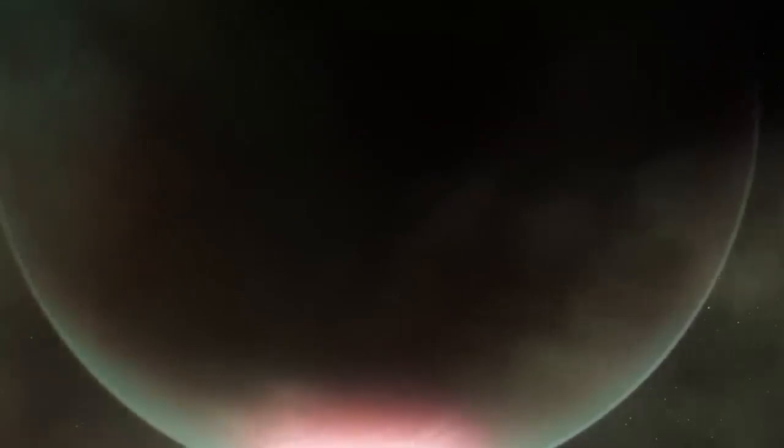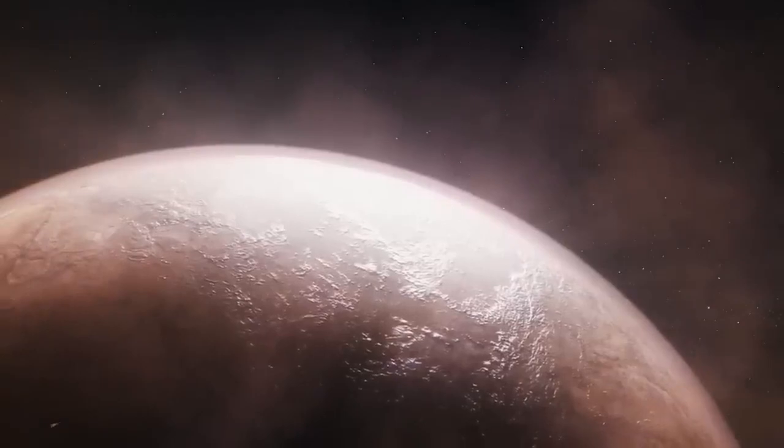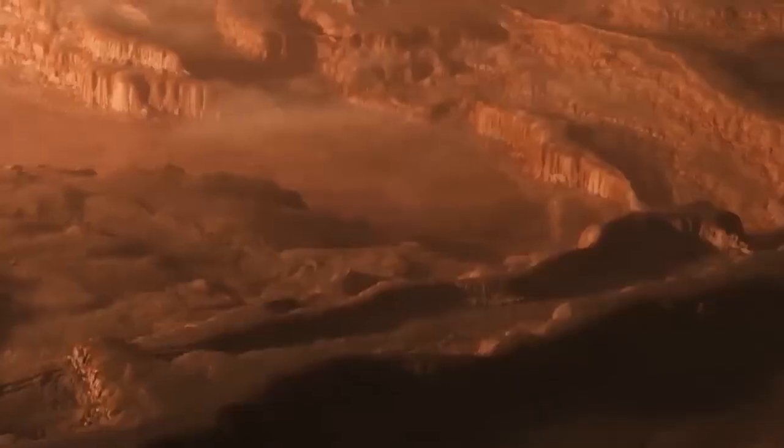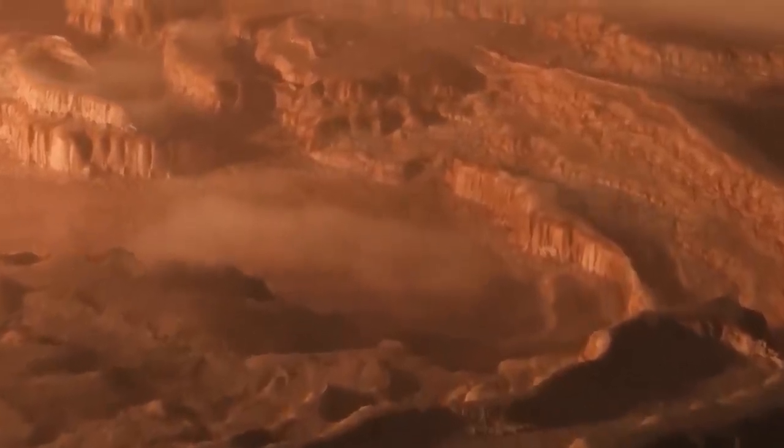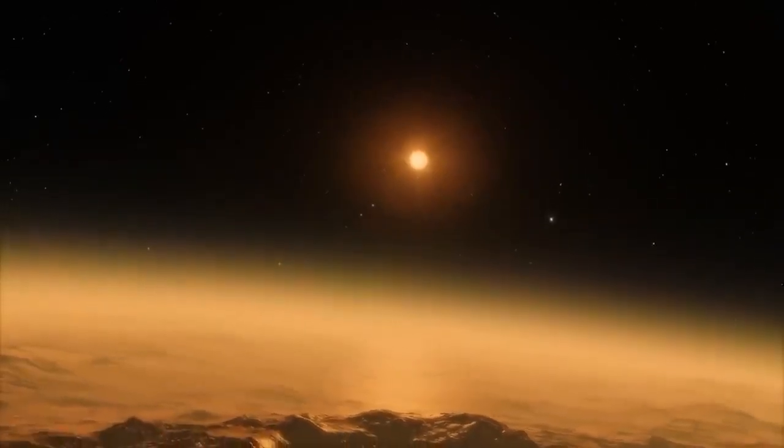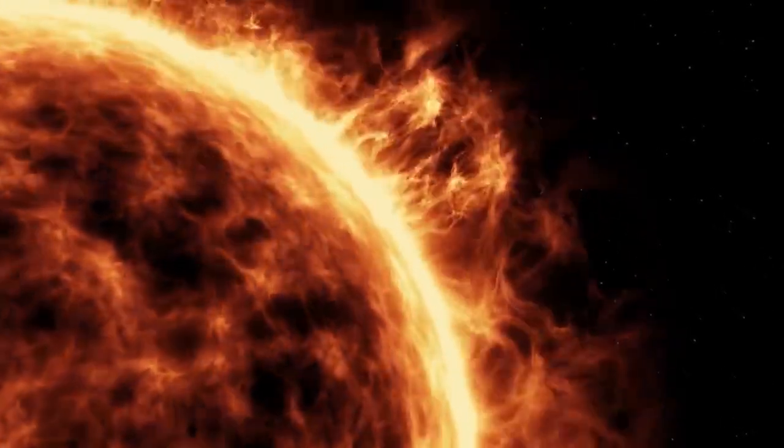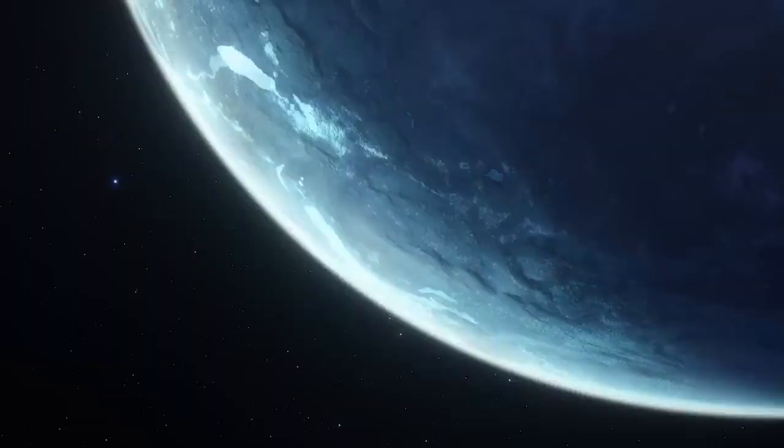Proxima Centauri is about an eighth the mass of the Sun and burns far less brightly than one might anticipate for a planet so near to its star, just 5% of the Earth's Sun distance. It may be anticipated to be a red-hot cinder, but liquid water could easily exist on Proxima b as long as the planet has an atmosphere to hold heat in, since the total energy reaching it from the Sun is only 65% of what Earth receives.